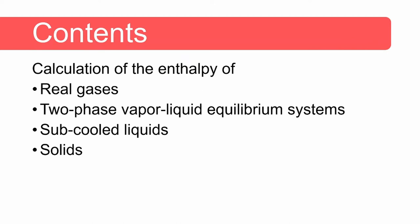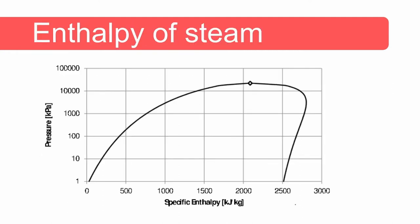We will cover the calculation of enthalpy for real gases, two-phase vapor-liquid equilibrium systems, and then sub-cooled liquids and solids. The enthalpy of steam as a function of pressure has this familiar dome shape. This line is the saturated vapor line, this line is the saturated liquid line, the area inside the dome is the two-phase region, this area is the superheated vapor and gas, and over here we have the sub-cooled and compressed liquid region.